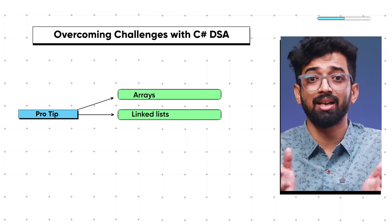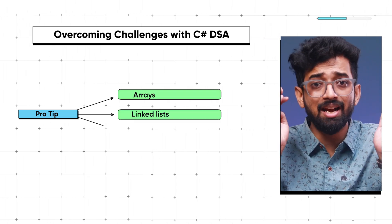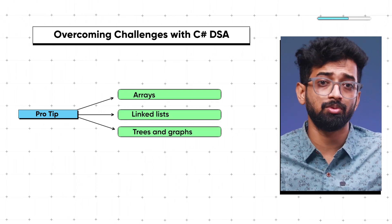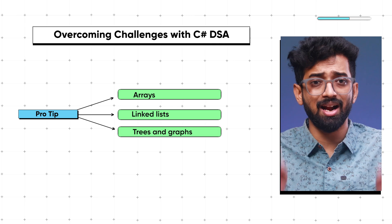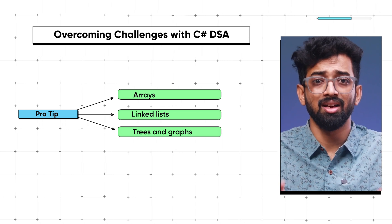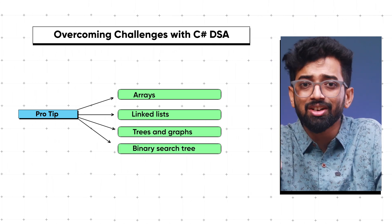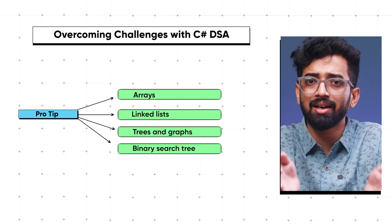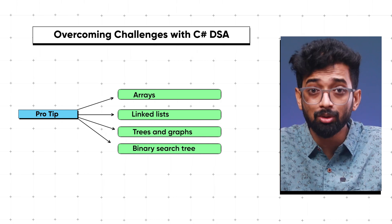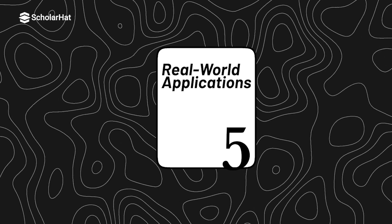Here's a pro tip: start with classic data structures like arrays and linked lists, then move on to trees and graphs using practical examples from .NET projects. For instance, implementing a binary search tree for efficient data retrieval can make your learning curve smoother.